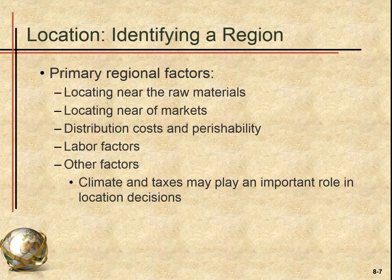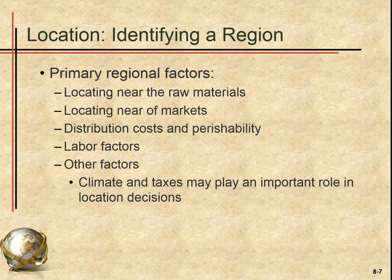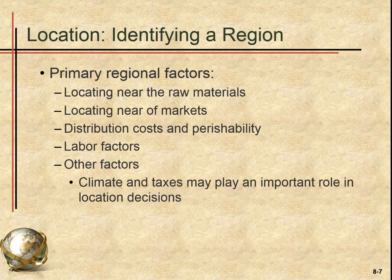When identifying a region — say you've decided to build your factory in the U.S. — you have to find where in the U.S. to do it. You need to decide if you need to be near raw materials or near specific markets like New York, L.A., or San Francisco. Consider shipping costs, labor, climate, and taxes. You have to find the perfect region for what you want to manufacture.